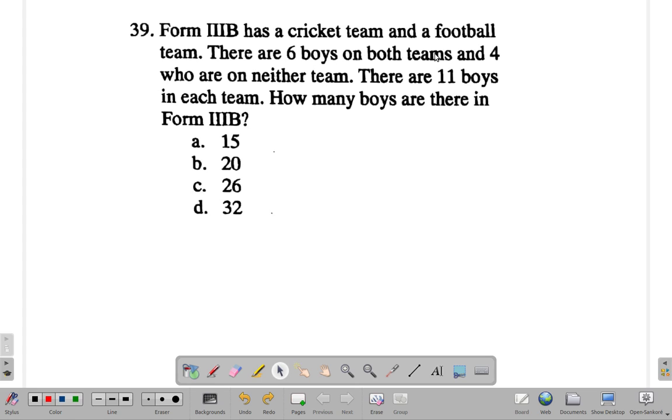There are six boys on both teams and four who are on neither team. Six on both, four on neither. There are 11 boys in each team. How many boys are there in Form 3B?